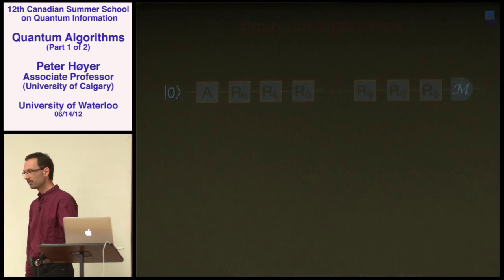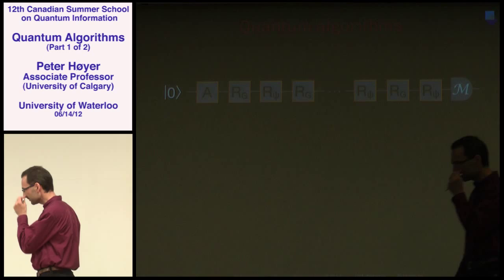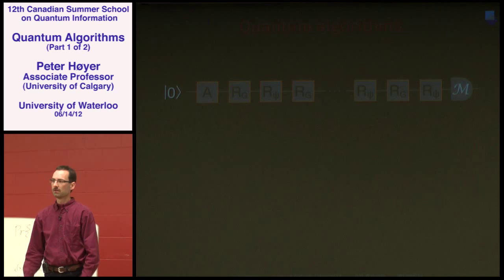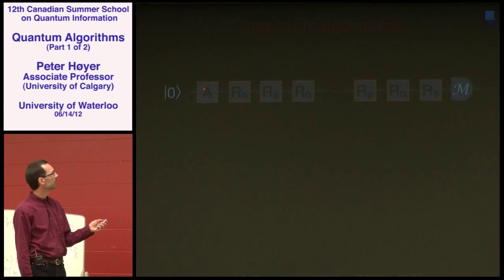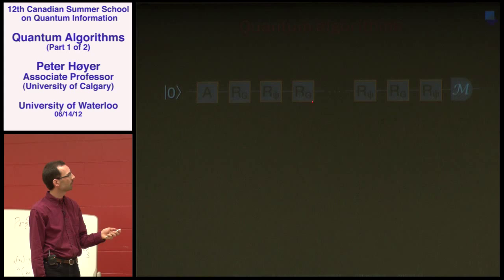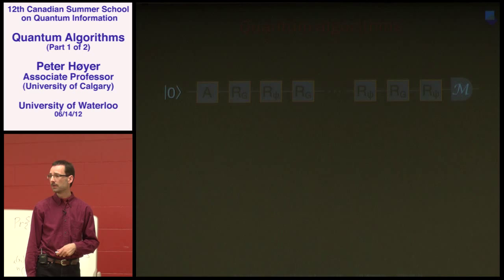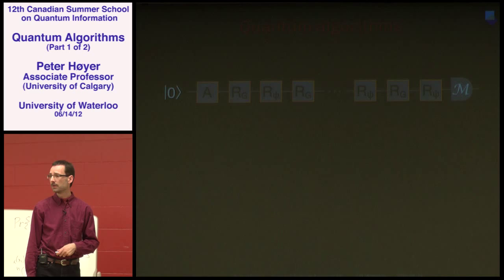Before the break, let's set up the model for the next part of the lectures. We've discussed one-query algorithms and Grover's algorithm. In general, any algorithm that uses an oracle takes the following form: start in some known state |0⟩, apply some arbitrary unitary that doesn't depend on the oracle, then alternate oracle queries with arbitrary unitaries.